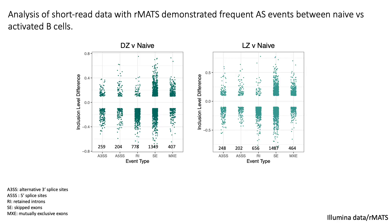We first checked the alternative splicing events which significantly changed between naive and activated populations. We performed rMATS analysis, a tool for alternative splicing analysis from short-read data. As you can see, in each pairwise comparison between activated versus naive populations, we were able to see robust changes in different alternative splicing events.